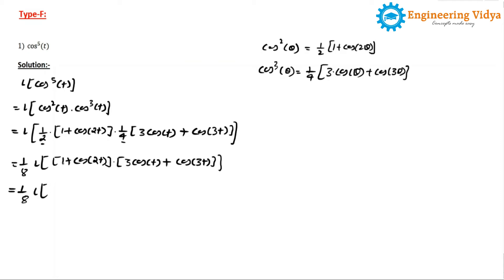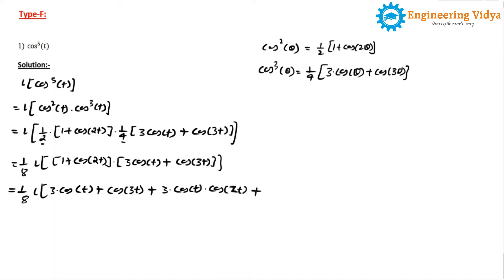Now we open the bracket. The 1 multiplies 3cos(t) giving 3cos(t), then 1 multiplies cos(3t) giving cos(3t). Then cos(2t) multiplies 3cos(t) giving 3cos(t)·cos(2t), and cos(2t) multiplies cos(3t) giving cos(2t)·cos(3t).